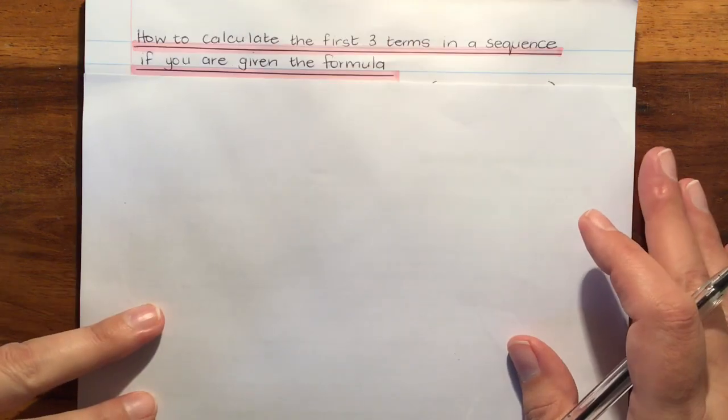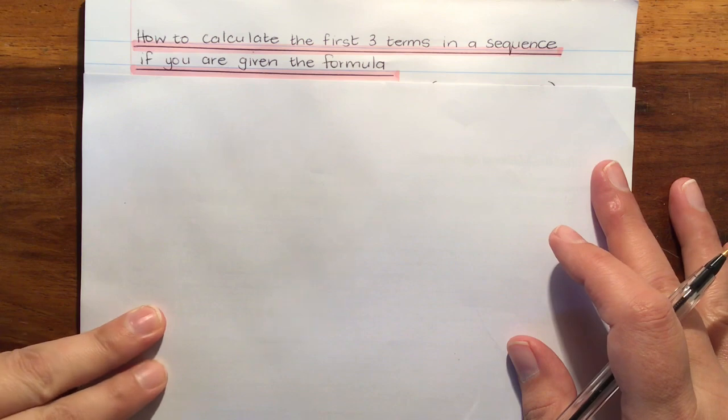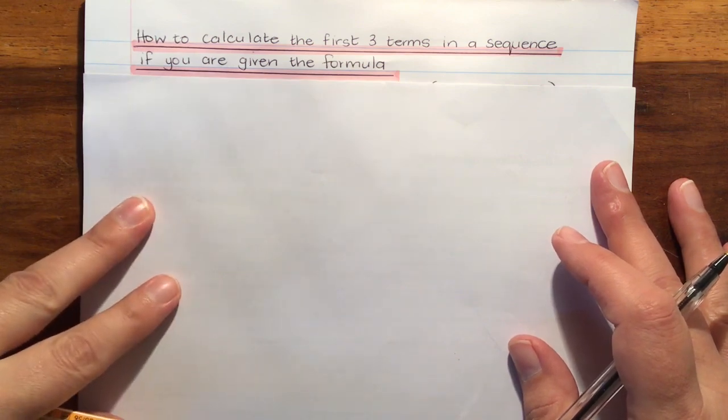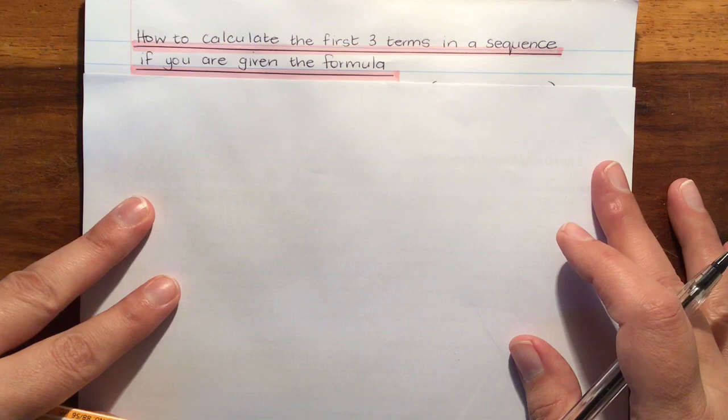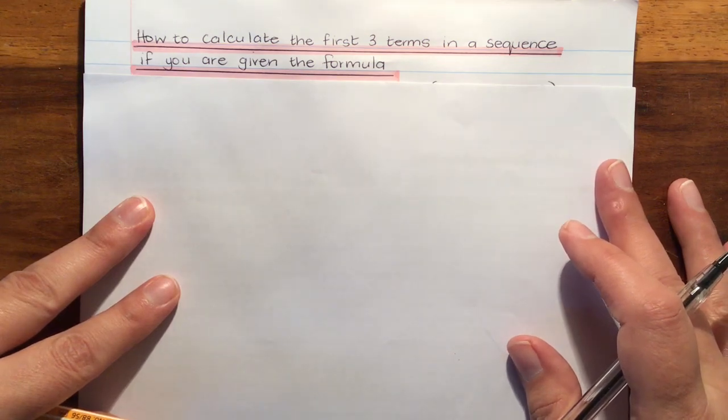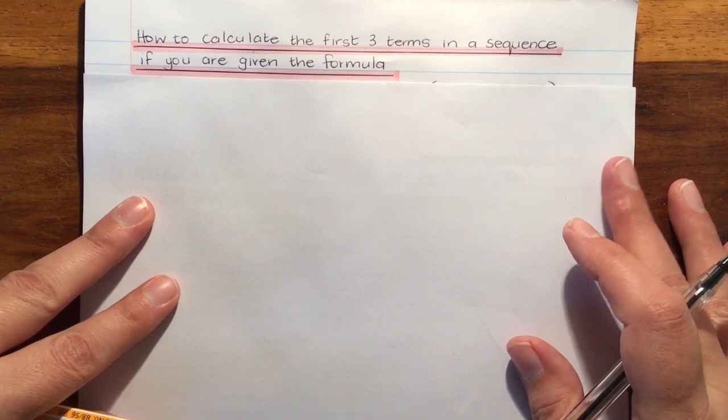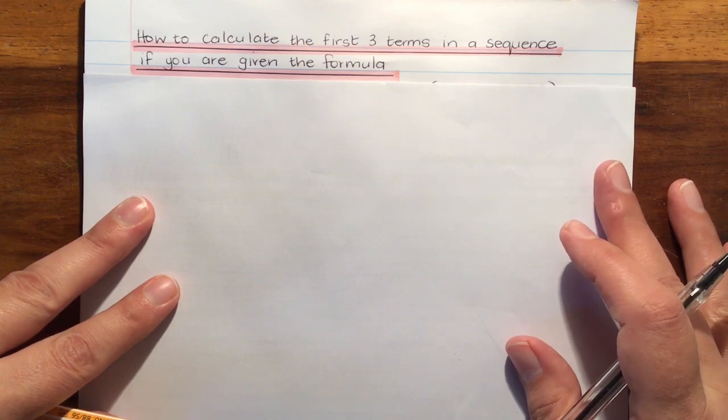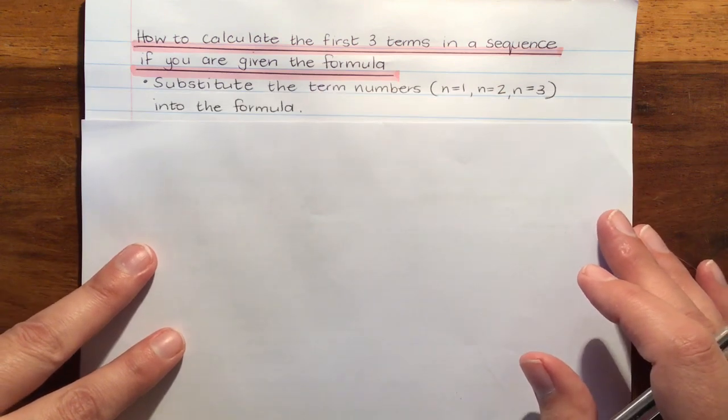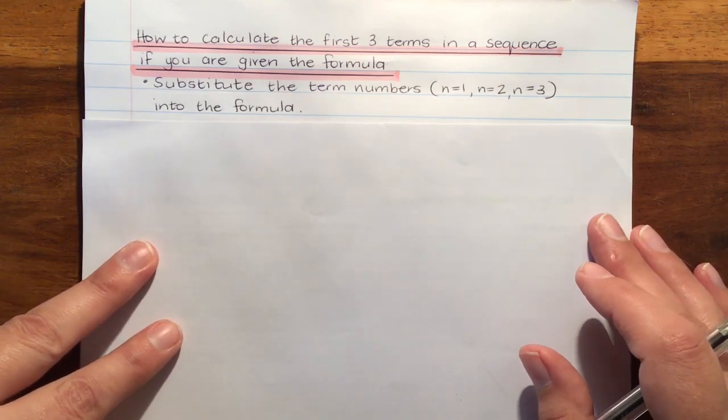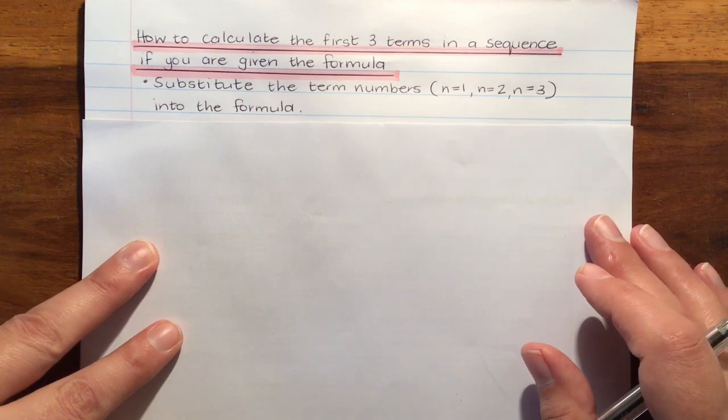Another kind of question you can get is how to calculate the first three terms in a sequence if you're given the formula. It's really actually like example 3, but we're working out more than one term. And although it's the same, some people do get confused because the wording could be different. So all we're going to do is the same step. We're going to substitute the term numbers n is 1, n is 2, n is 3 into the formula.